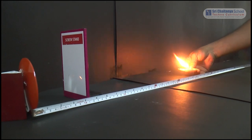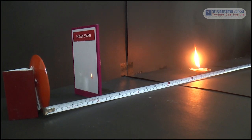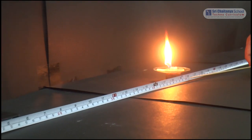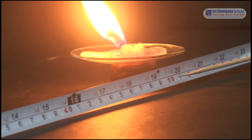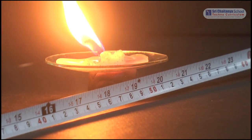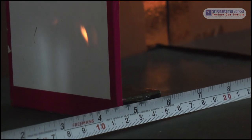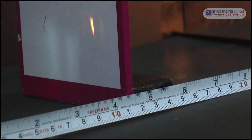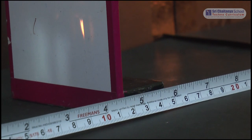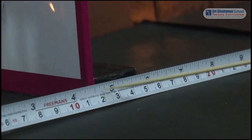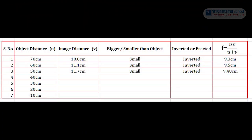Now move the object a little forward and keep it at the 50 cm mark. The object is placed at 50 cm. Again trace the image by adjusting the screen back and forth until a sharp image is obtained on the screen. In this case, we get the image at nearly 11.7 cm. Note the values in the table: object distance 50 cm, image distance 11.7 cm, and the focal length is 9.48 cm from the calculation.